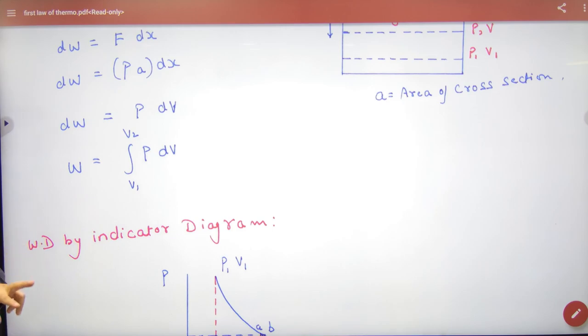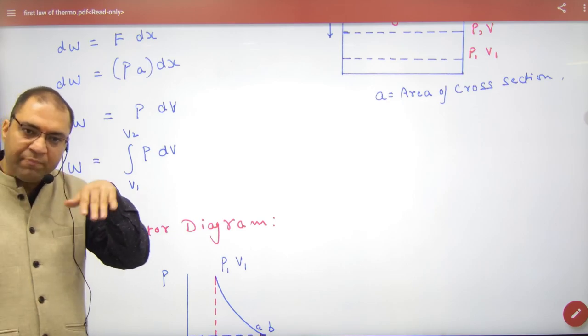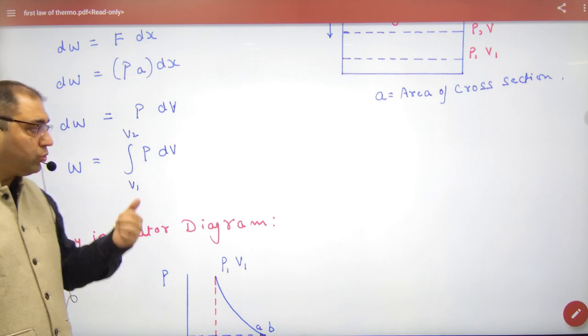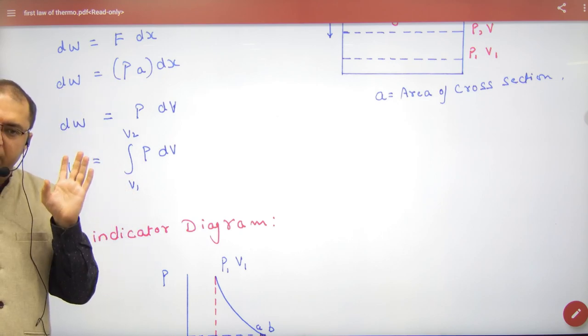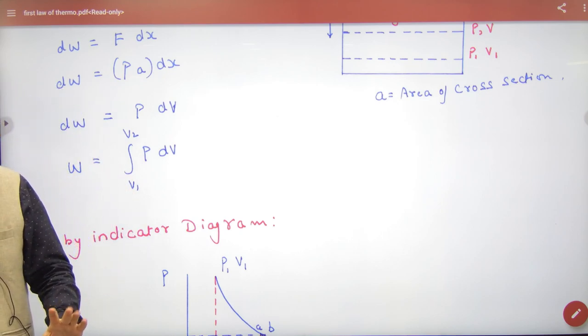Work done now. Area under pv diagram and other mathematical P dv integration from V1 V2. Next.